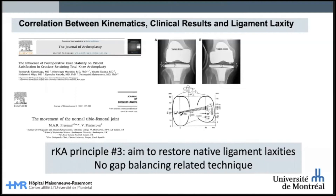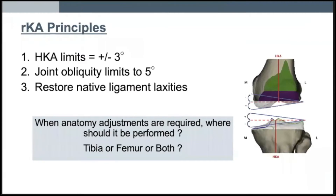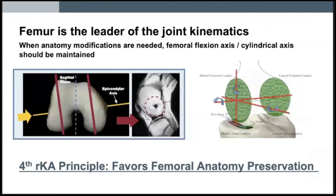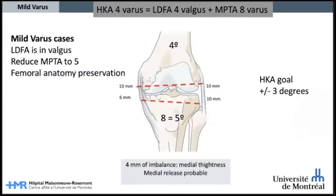We should avoid all gap balancing related techniques to modify bone resection. The next question is: when anatomy adjustments are required, where should they be performed — on the tibial side, the femoral side, or both bones? We know that the femoral anatomy is the key of the knee joint kinematics. Maintaining its flexion axis orientation and joint surfaces anatomy is a priority. This is our fourth principle: when performing anatomical modification to reach our RKA thresholds, we should favor femoral anatomy preservation.